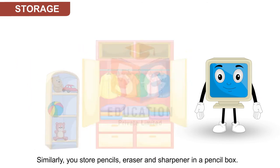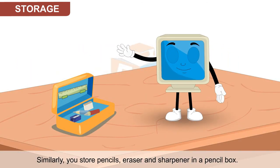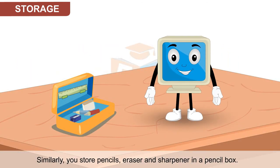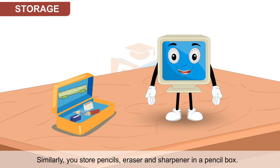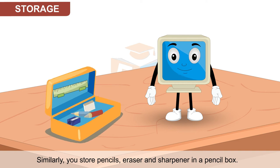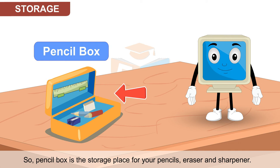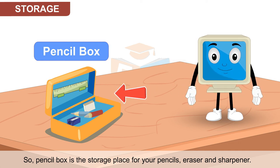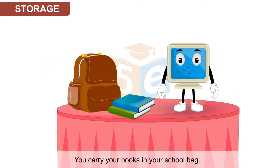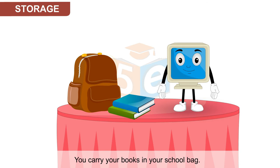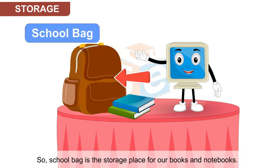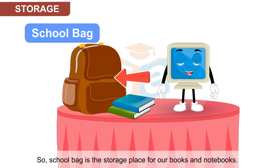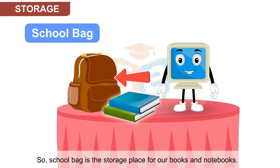Similarly, you store pencils, eraser and sharpener in a pencil box. So pencil box is the storage place for your pencils, eraser and sharpener. You carry your books in your school bag. So school bag is the storage place for our books and notebooks.